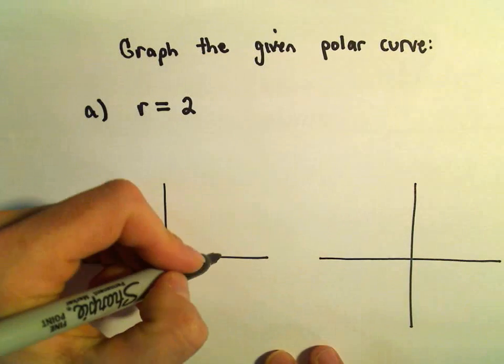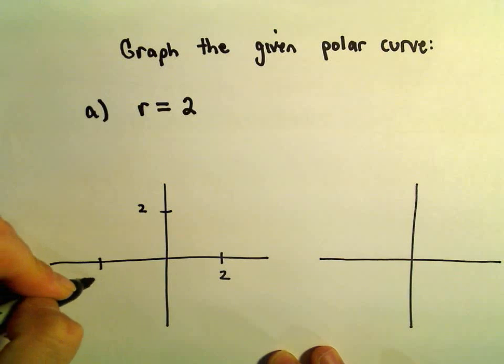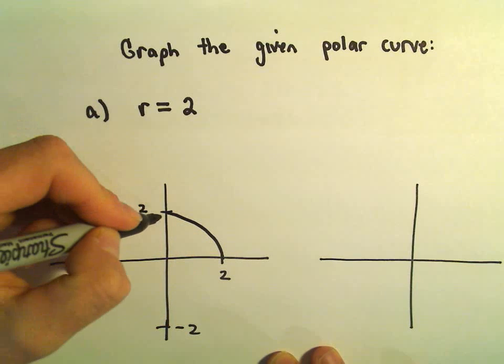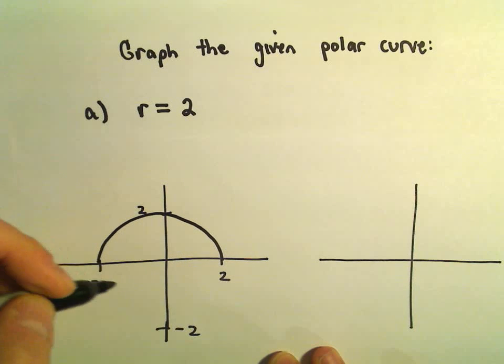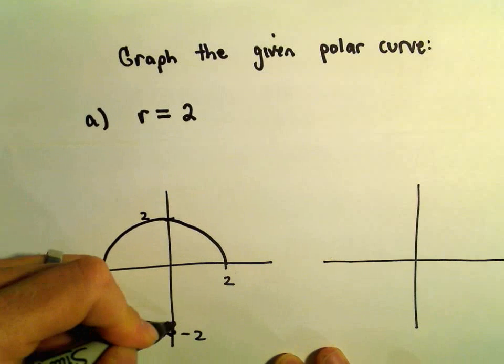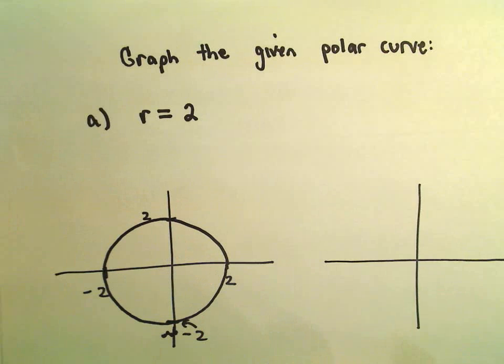Well, if you do that, if you kind of neglect the angle, if you allow it to be whatever you want it to be, but you always go at a distance of 2, that's just going to make a nice circle. So I think I put my negative 2 down here a little too far. Let's make negative 2 right there. It's just going to be a circle of radius 2.